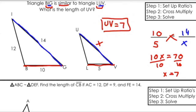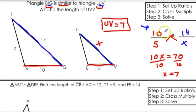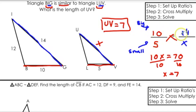An important point: whenever you're setting up your ratios, the same triangle has to go on top and the same triangle has to go on the bottom. Here, 10 and 14 were both from the bigger triangle on top, and the small triangle went on the bottom. You don't always have to put big on top — we'll do it the other way next time — but they always have to be consistent: big-big on top and small-small on bottom, or the reverse.